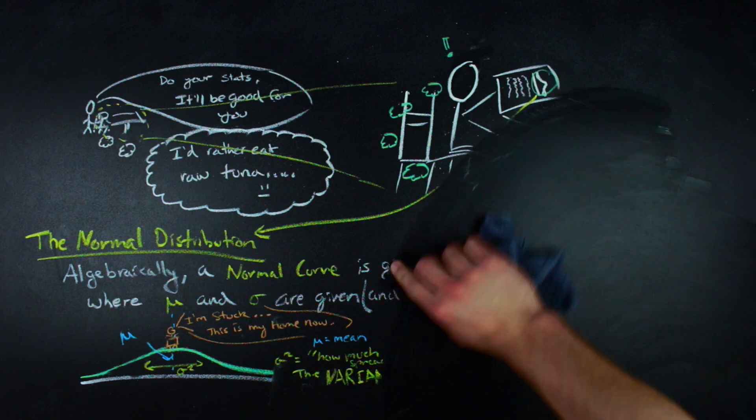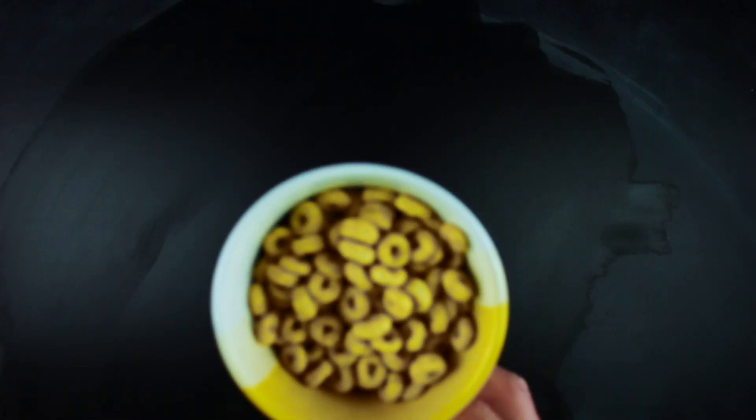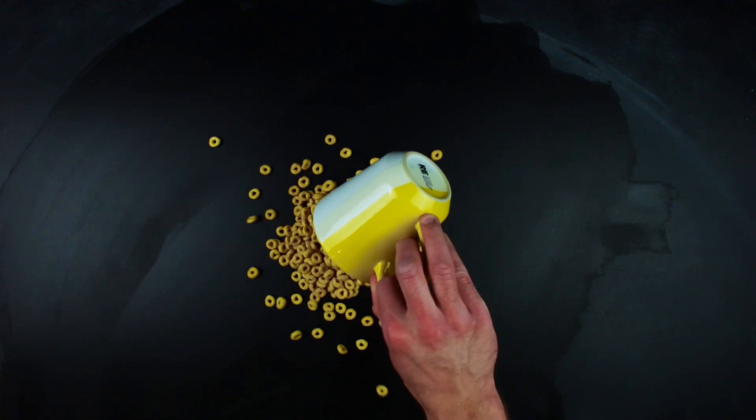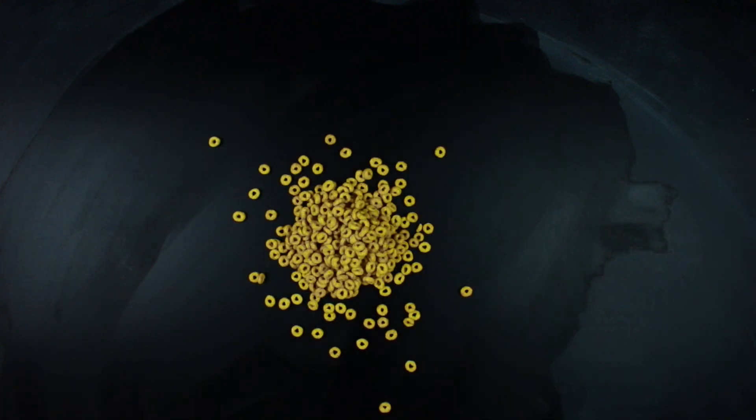One pretty cool example that is pretty simple to pull off lets us generate a normal curve with a snack of your choice. More precisely, we can get an approximately normal distribution. If you take some small snack-sized dry food, I'll be using Cheerios, and then pour them out over a single location from a relatively low height. If you do this too high, you're going to make a huge mess.